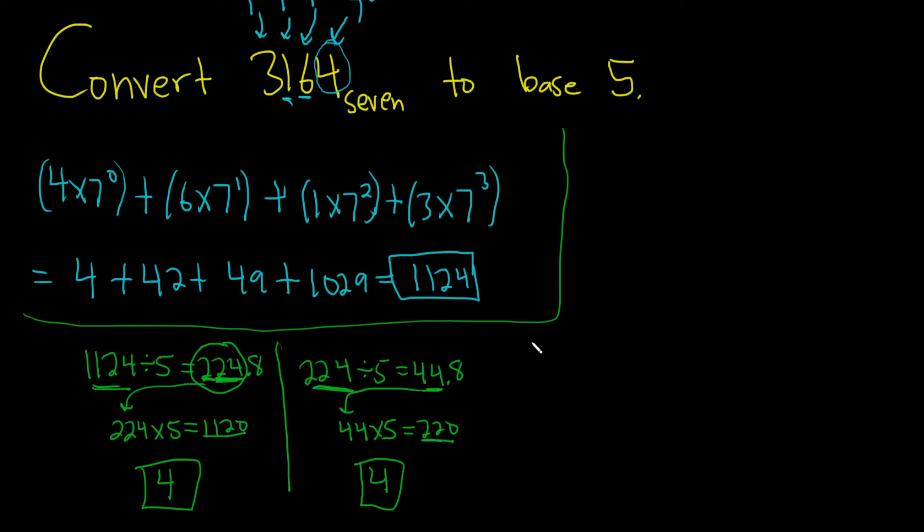Then we do it again. So we take the 44 and divide it by 5. At this point, you can do it in your head. You see the remainder is 4. 5 times 8 is 40, so you're left with 4. But let's keep going with the algorithm. This is 8.8. Then you just take this number, multiply it by 5. So 8 times 5 is 40. Subtract. See, the remainder is 4.